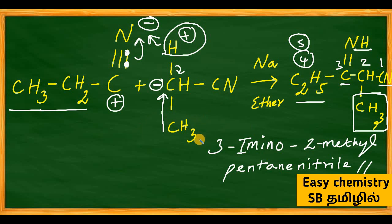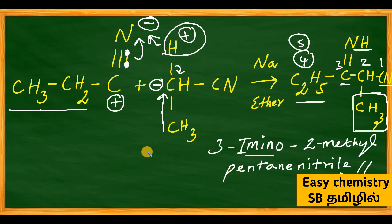This is the Thorpe-Nitrile self-condensation reaction. To summarize: alkyl nitrile on the left side reacts to give iminonitrile on the right side. You can now write the complete reaction and get the full marks. I hope you understand this. Please like and share. Thanks for watching — see you in the next one.